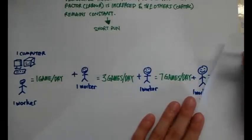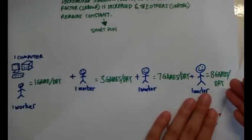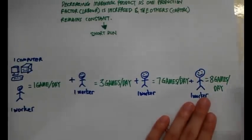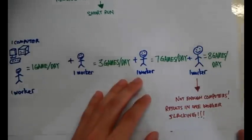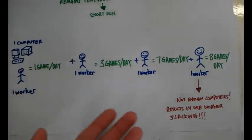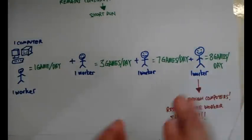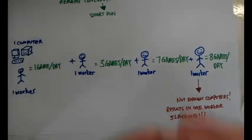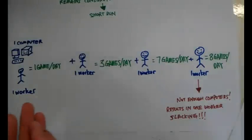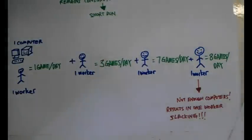Now we add on another worker, but it becomes eight games a day. Hey, why isn't it increasing much more? Well, the reason is because there's only one computer, and this results in one worker slacking. So it is not necessarily good to always hire more and more people because your capital might not be able to sustain your level of production. That's what the law of diminishing returns is telling us.